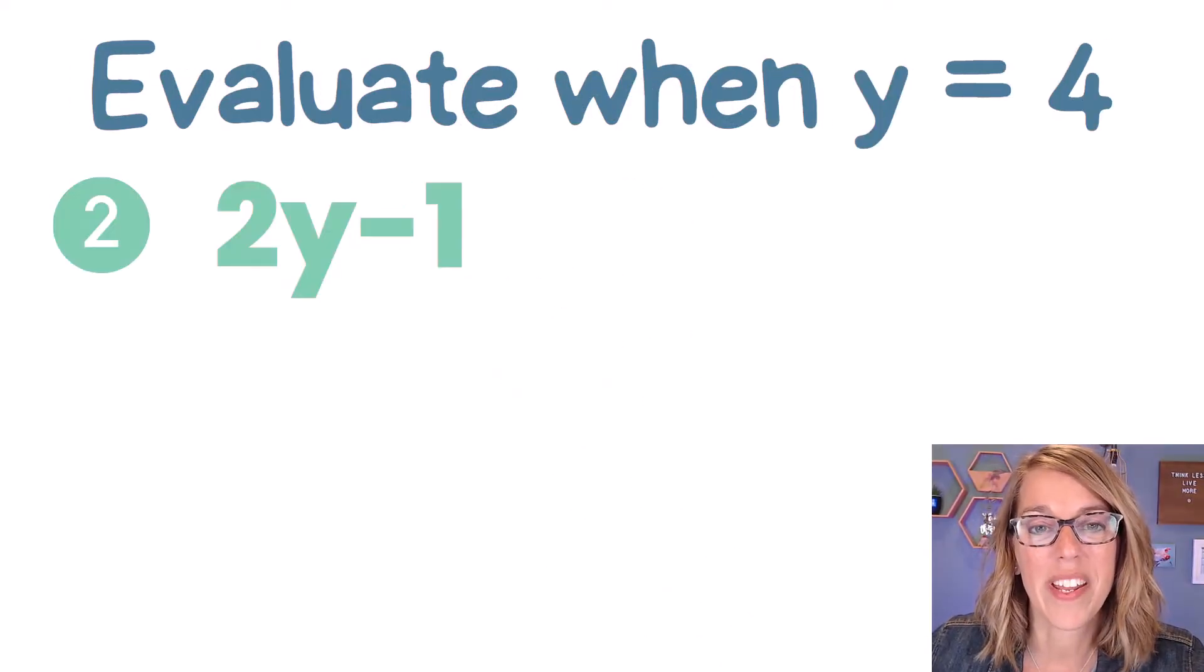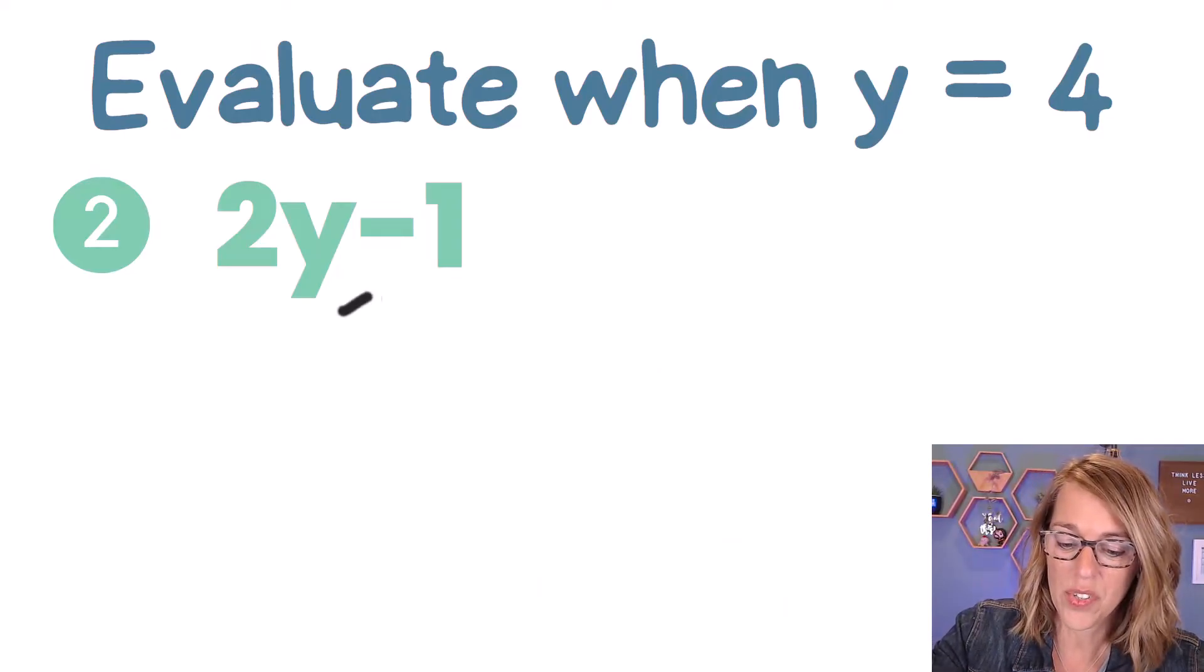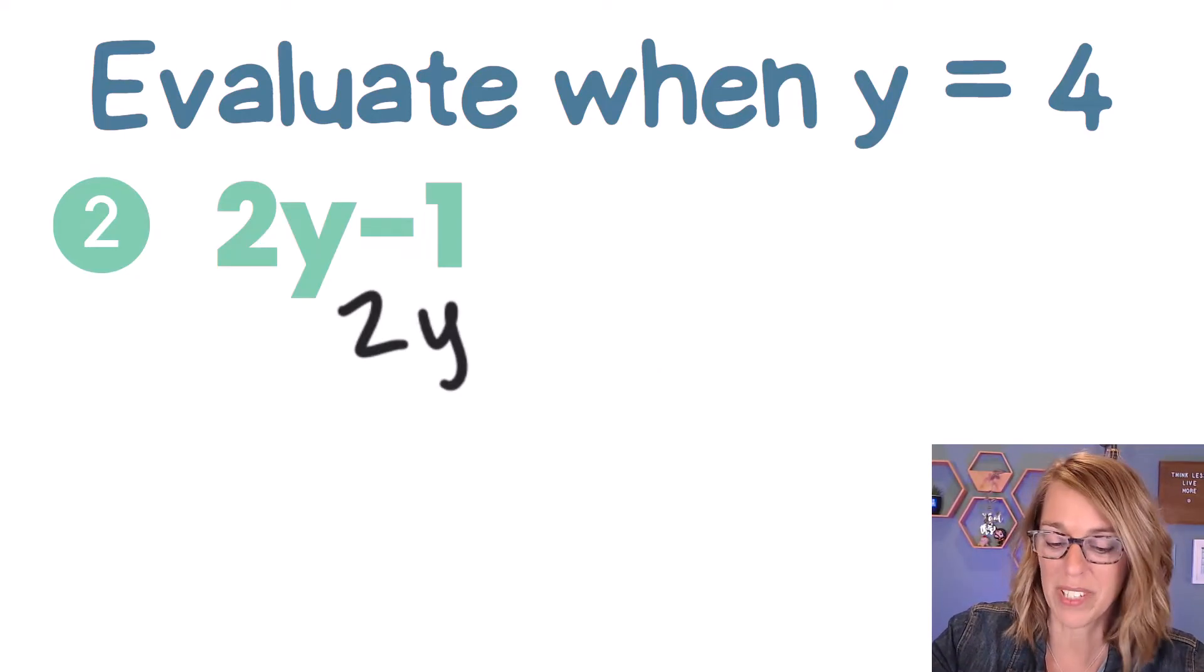Here's our next one. We want to evaluate 2y minus 1 when y is equal to 1/4. Now this 2 next to the y really means multiplication.